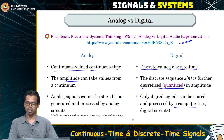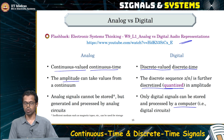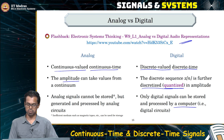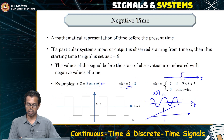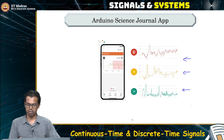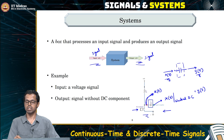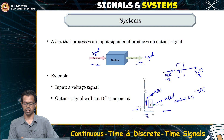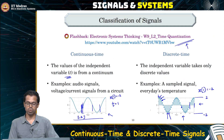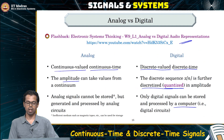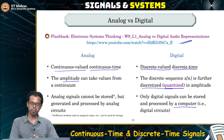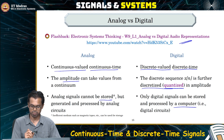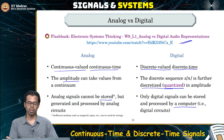We need to digitize signals when we want to process and store them in a computer, because a computer cannot store infinitely many values — we have finite storage, meaning we can only represent a finite number of points in time and amplitude. This is typically done by digital circuits. The circuits we saw as examples earlier are analog circuits — there is no digitization. They directly process a continuous time signal into another continuous time signal.